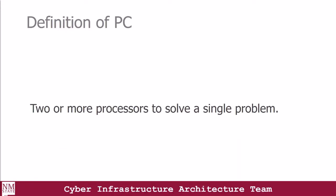So what is parallel computing? PC is the use of two or more processors in combination to solve a single problem. In this case, the programmer would have to figure out how to break the problem into pieces, and he also has to figure out how the pieces relate to each other.